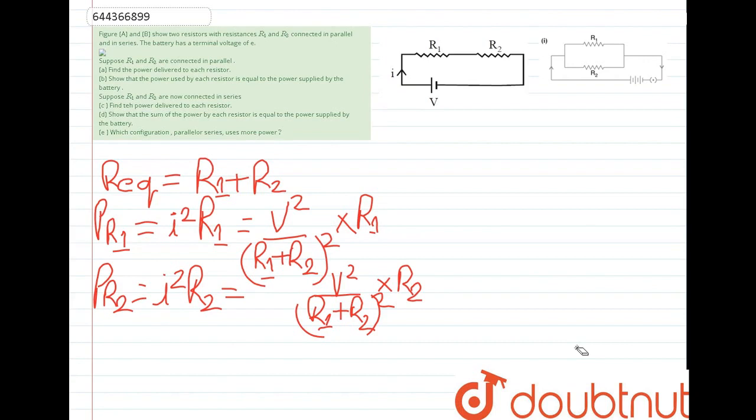Find the power delivered to each resistor. This will be the power delivered to each resistor. We need to find the condition where the sum of power is required. P R1 plus P R2. Adding these two will give V square, R1 plus R2 over R1 plus R2 whole square. R1 plus R2 will get added and cancelled.